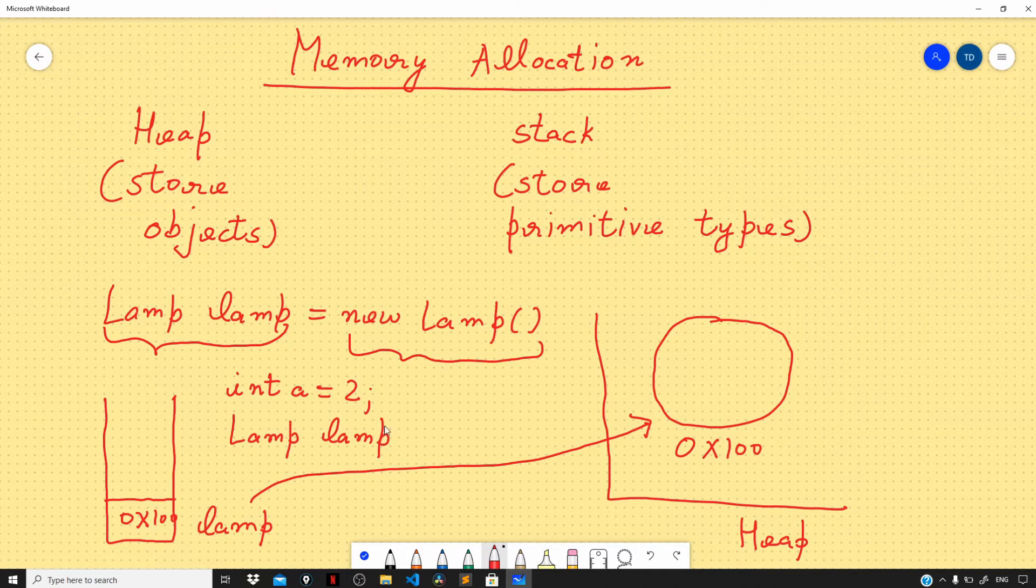In this example, both the lamp and lamp2 will reference the same object on the heap. Let's visualize this. When we say 'Lamp lamp2 equals lamp,' we are saying whatever memory location the reference lamp is pointing at, make sure that lamp2 also points to that very memory location.